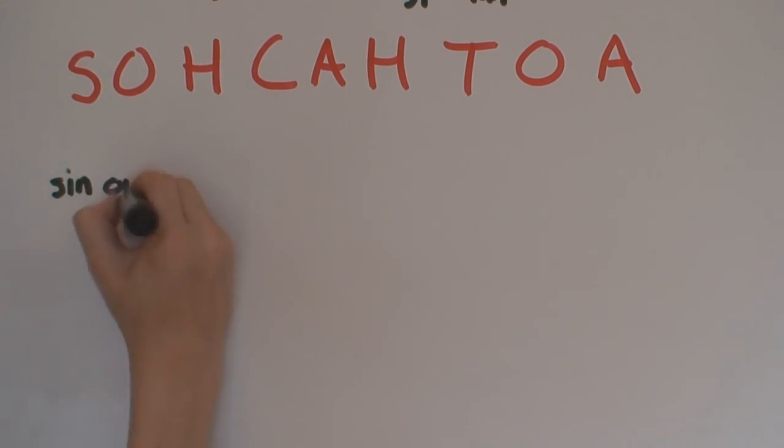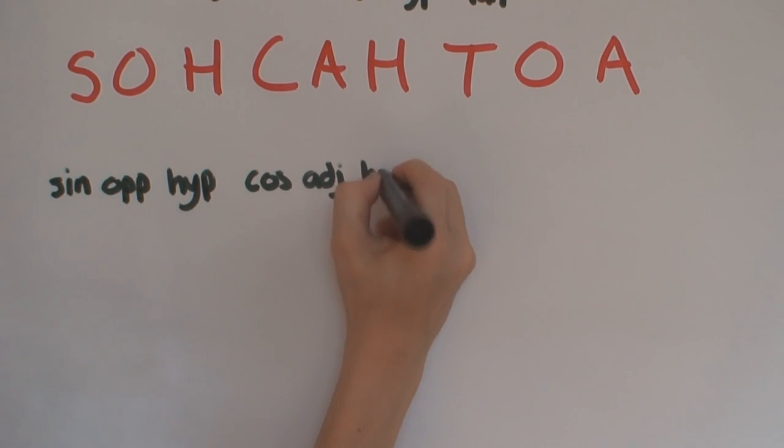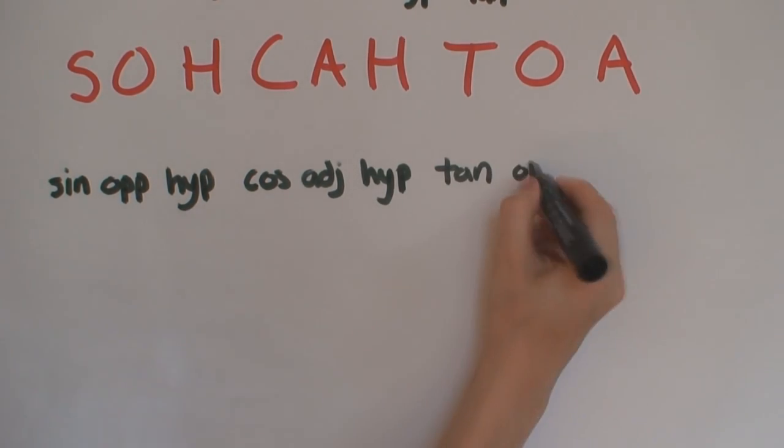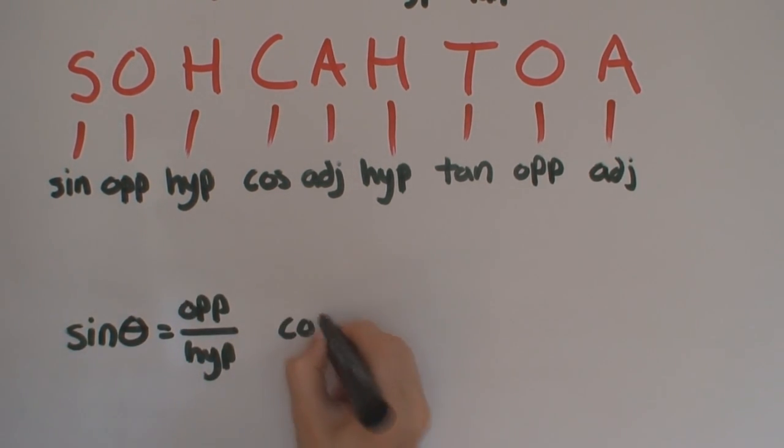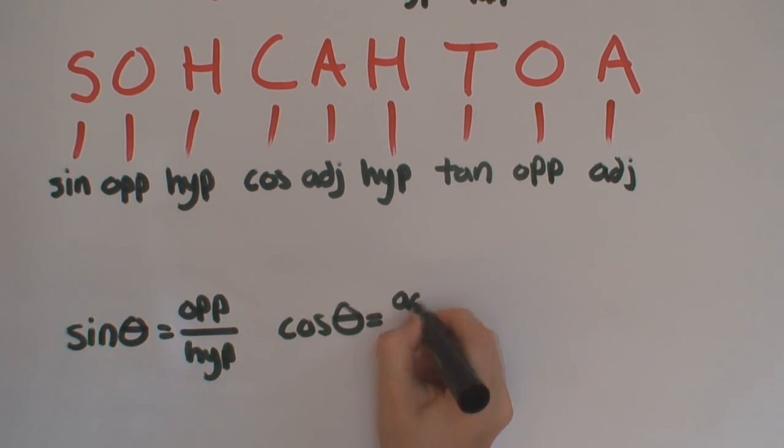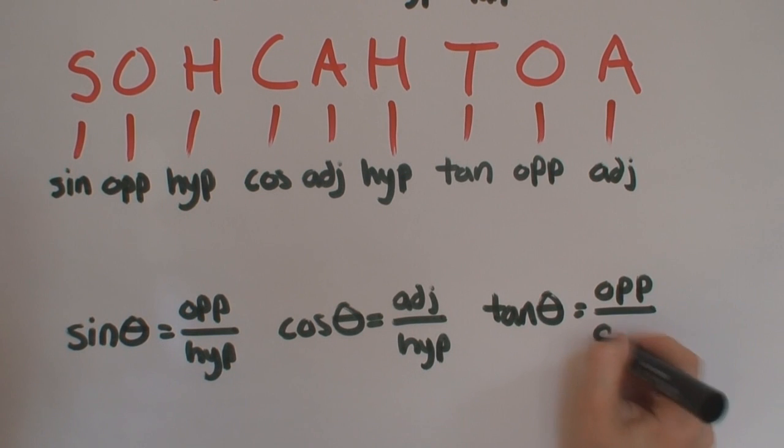SOHCAHTOA means sine opposite hypotenuse, cosine adjacent hypotenuse, tangent opposite adjacent. That's sine theta is equal to opposite over hypotenuse, cosine theta is equal to adjacent over hypotenuse, and tangent theta is equal to opposite over adjacent.